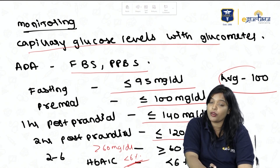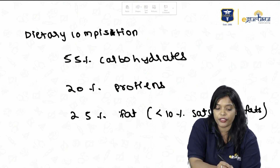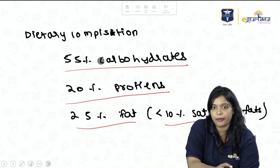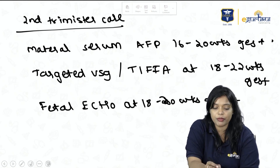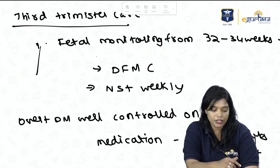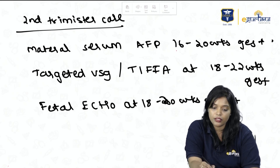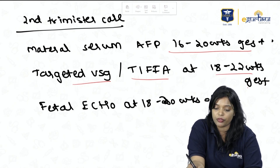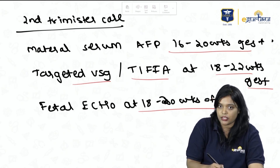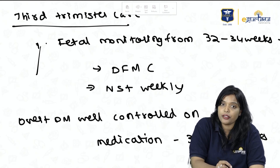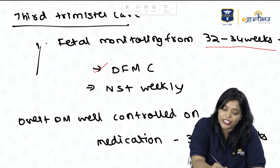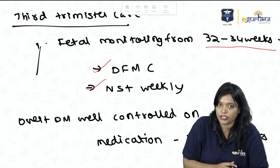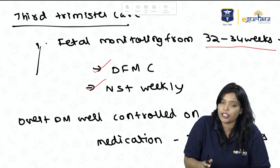As patients are prone to anomalies, an anomaly scan is required. The dietary composition should be 55% carbs, 20% proteins, and 25% fats, with less than 10% saturated fats. In the second trimester, measure maternal serum alpha-fetoprotein (for neural tube defects) between 16–20 weeks, do a targeted USG or TIFA scan at 18–22 weeks, and fetal echo between 18–20 weeks. In the third trimester, do fetal monitoring from 32–34 weeks, with daily fetal movement count and weekly NST.